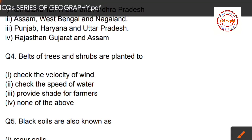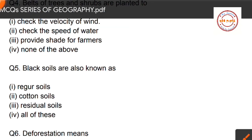Question number four: belts of trees and shrubs are planted to — first option: check the speed of the water; third option: provide shade for farmers; fourth option: none of the above. The correct answer is option one — belts of trees and shrubs are planted to check the velocity of the wind.